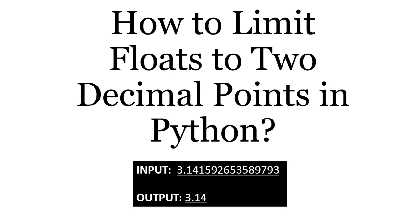Today we will be learning how to limit float values to two decimal points in Python. Here's an example: can you identify this huge value? This is the value of pi, and we will now limit it to two decimal places to derive the output as 3.14. We will use several other examples as well, but I hope this gives you an idea about the question we are going to discuss today.